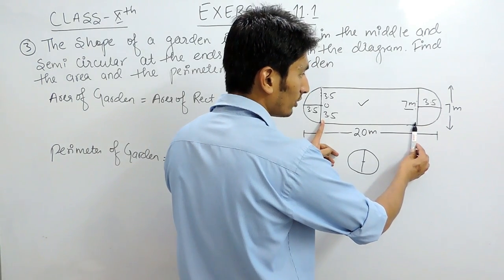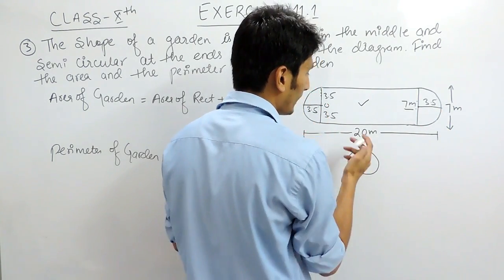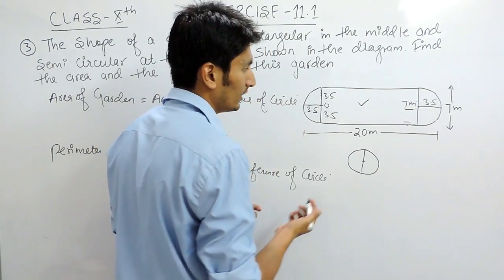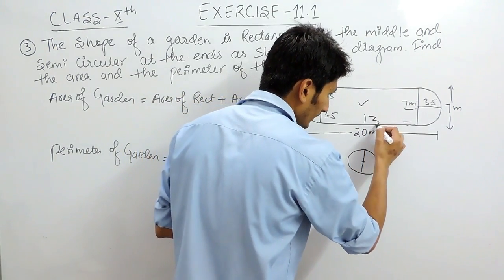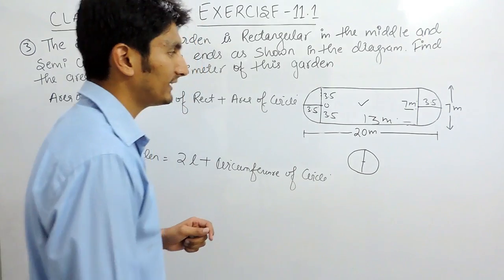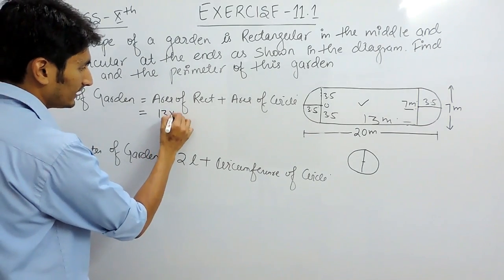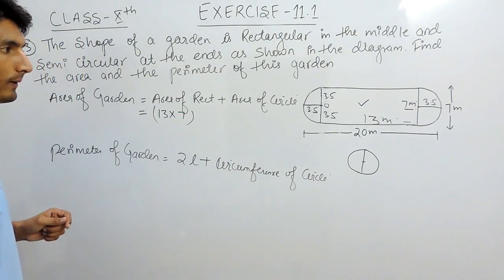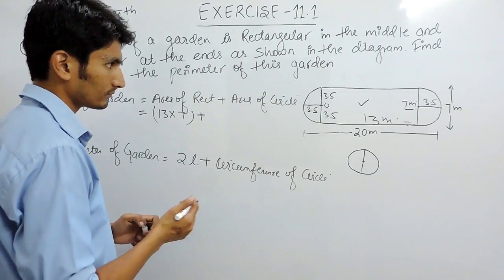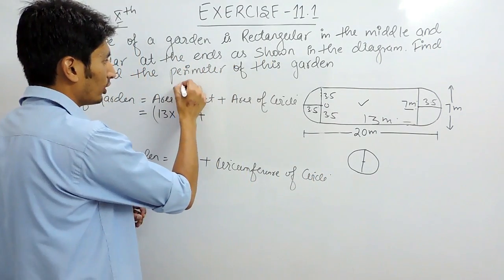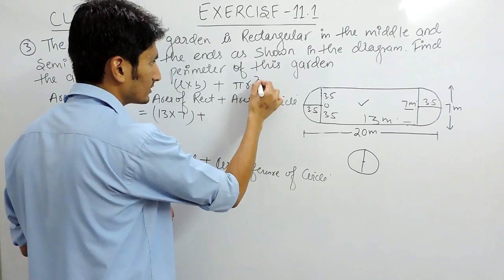To find the length of the rectangle, we subtract the two radii from the total length: 20 minus 7 equals 13 meters. So the length of the rectangle is 13 meters. The area of the rectangle is length times breadth, which is 13 into 7. The area of the circle is π r squared.